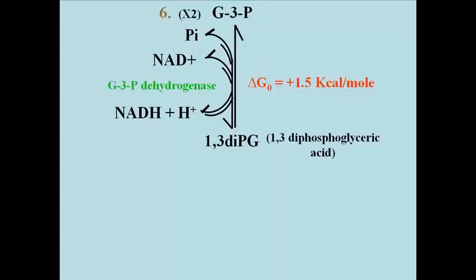Most biological redox reactions are in fact catalyzed by dehydrogenases, meaning removal of hydrogen, because they usually involve the movement of electron pairs on either hydride ions or complete hydrogen or H₂ molecules. This reaction is yet another endergonic reaction based on its energetics in a closed system under standard conditions, where delta G⁰ is equal to plus 1.5 kilocalories per mole.